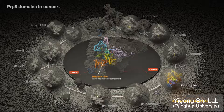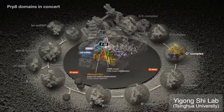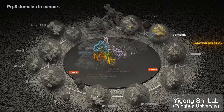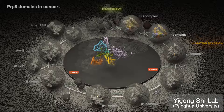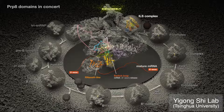It then acts to displace the duplex, allowing insertion of the 3' splice site. Finally, its movement, and that of the switch loop, culminates in the release of the 5' exon and mRNA.